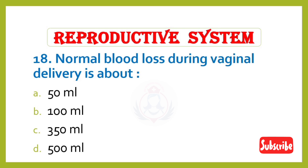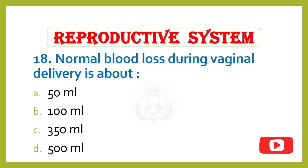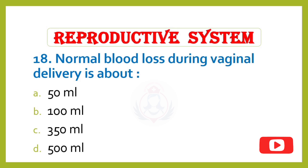Question 18. Normal blood loss during vaginal delivery is about: Option A – 50 milliliters, Option B – 100 milliliters, Option C – 350 milliliters, Option D – 500 milliliters. Correct answer is Option D: 500 milliliters. Blood loss exceeding 500 milliliters within 24 hours is considered postpartum hemorrhage (PPH).